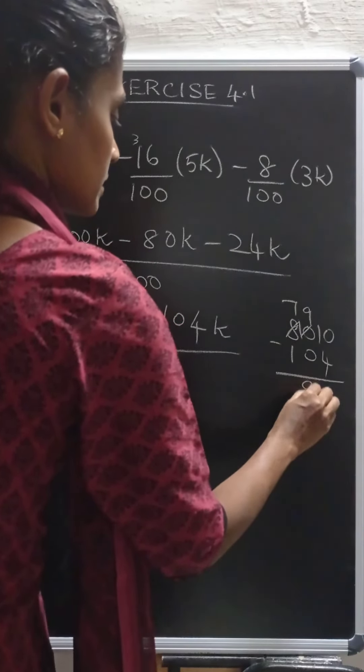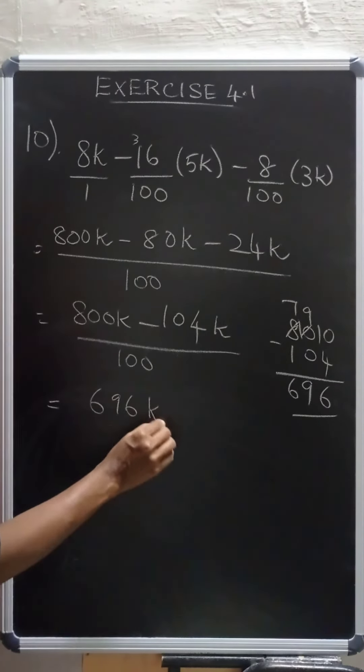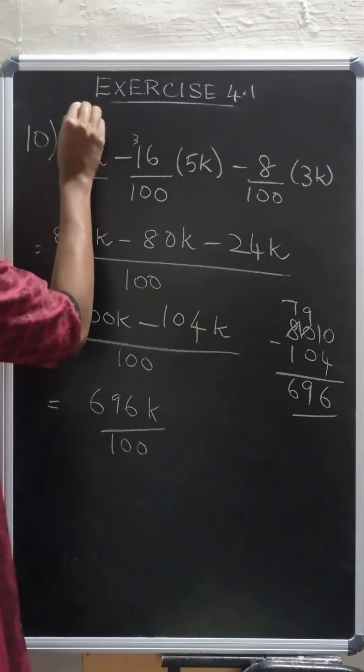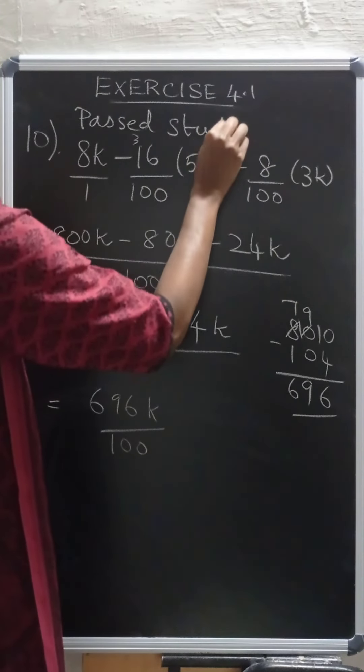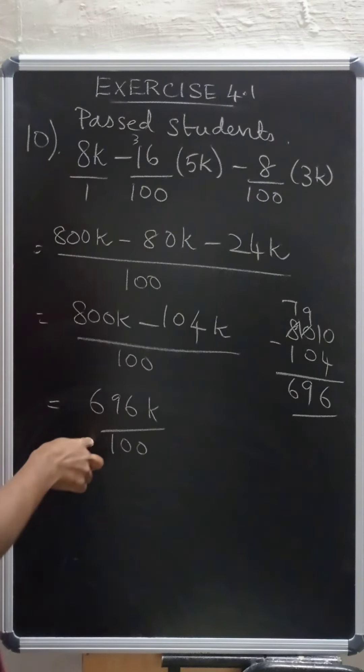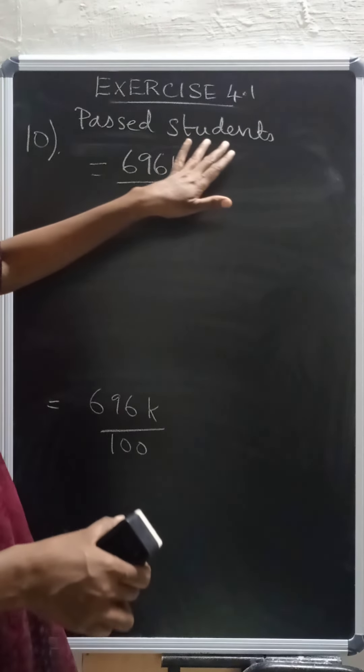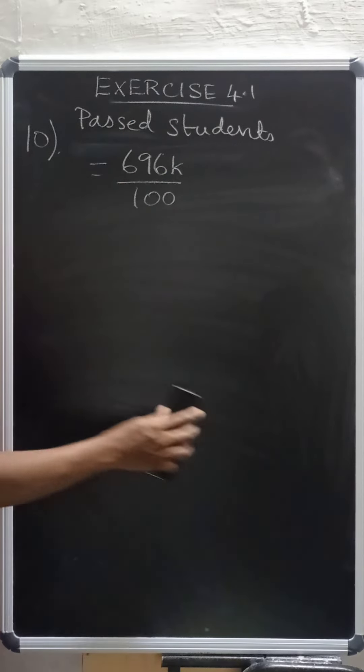696. So 696k by 100. So how many students have passed? Passed students is equal to 696k by 100. See, now we have found the passed students. Number of passed students is equal to 696k by 100. Now we need to find percentage for passed students.